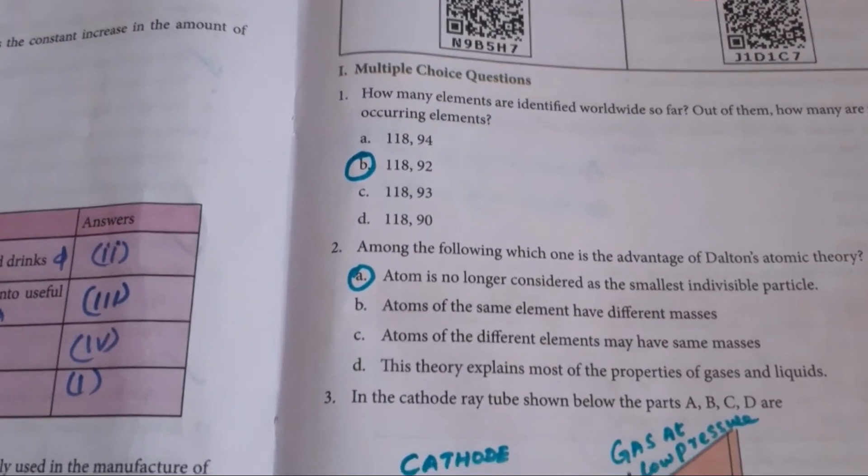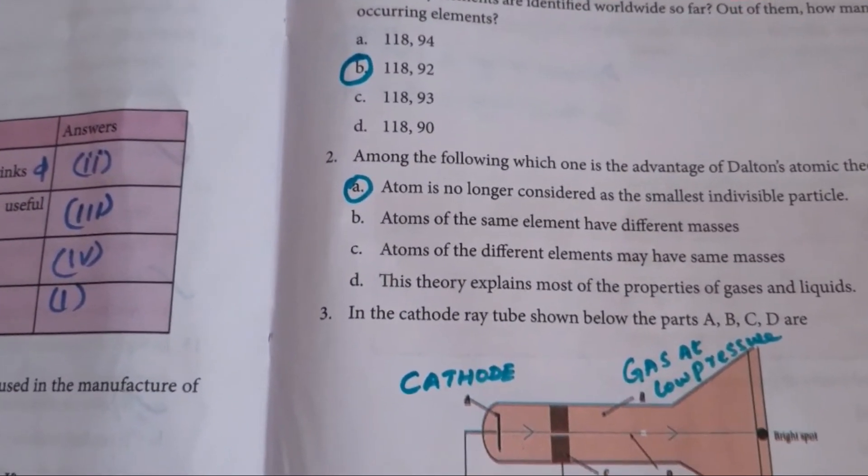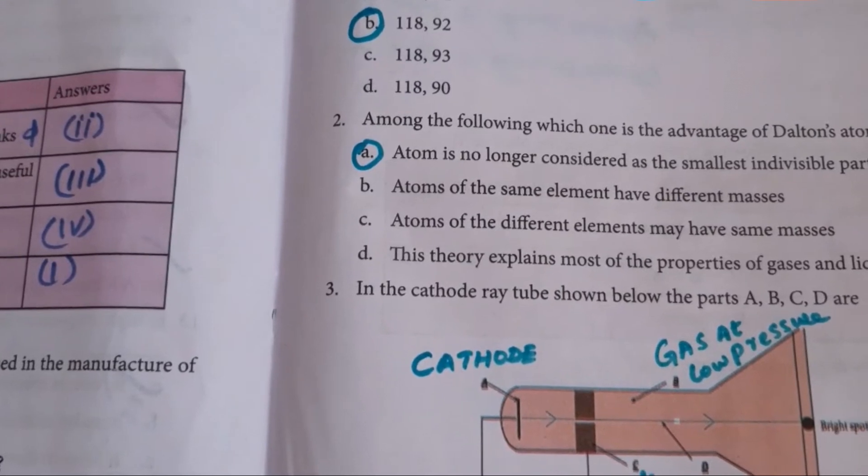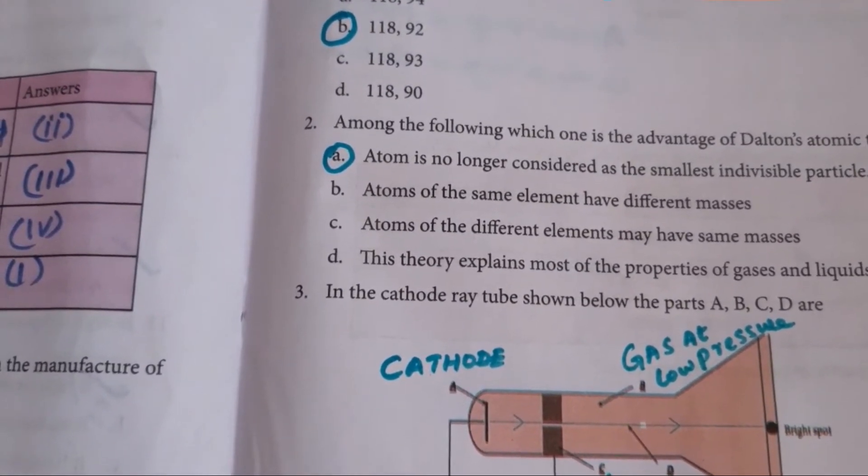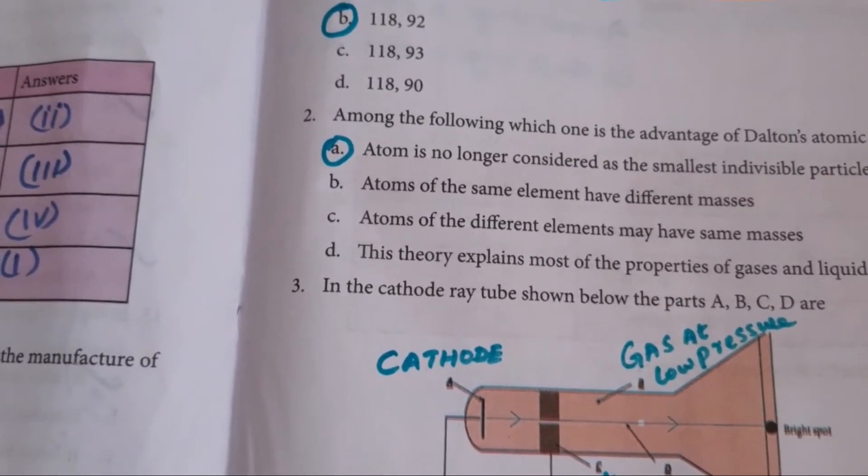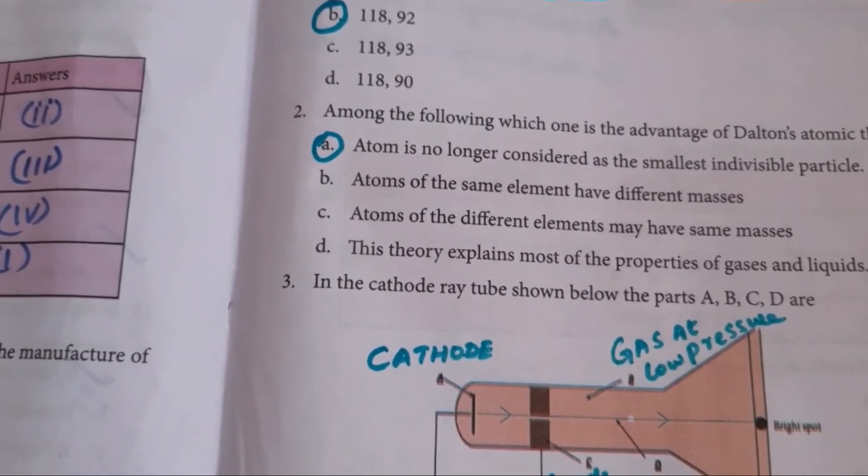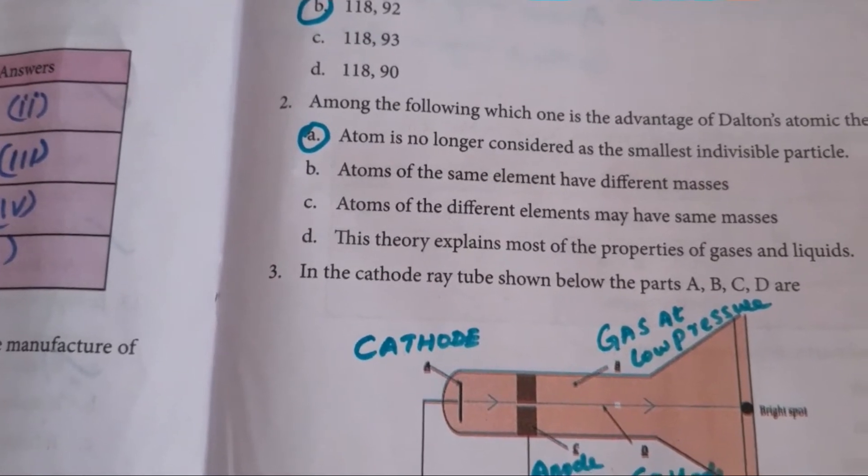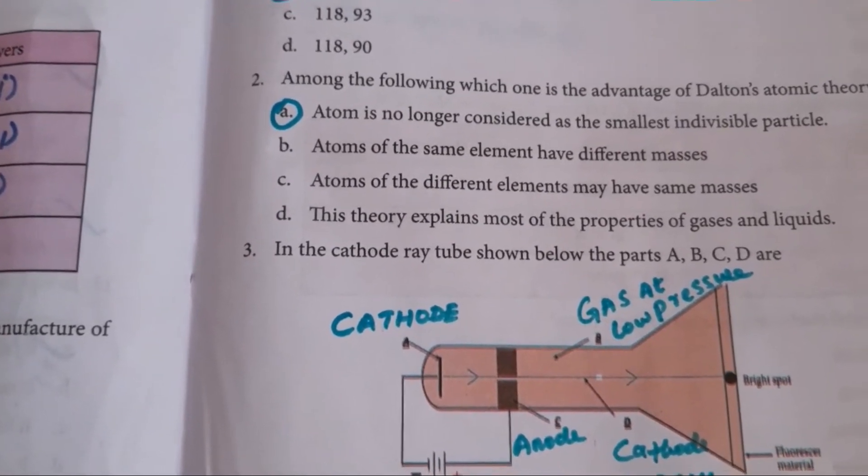Among the following, which one is the advantages of Dalton's atomic theory? So for this, you just go through the choices and find the answer. For this, the answer is, atoms is no longer considered as the smallest indivisible particle.